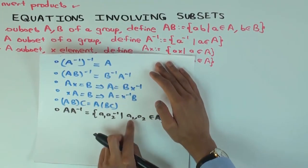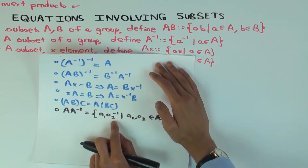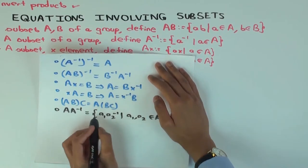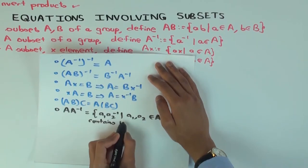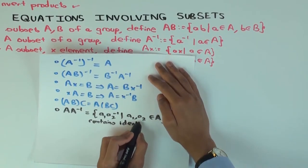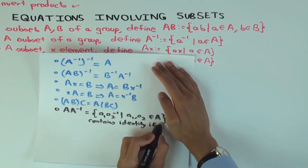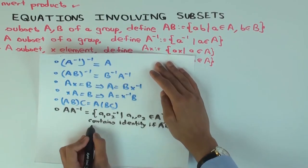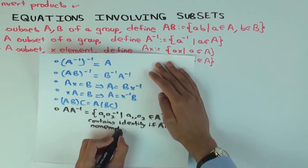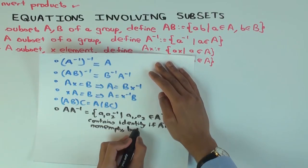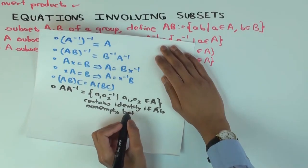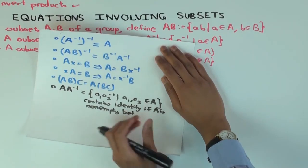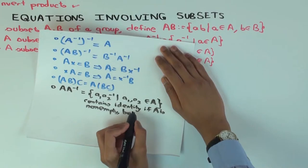Now, if A is non-empty, you pick A1 and A2 as equal elements, you will definitely get the identity element. So this contains the identity if A is non-empty. But it could be bigger. In fact, it usually will be bigger unless A just has one element. If A has more than one element, it definitely would be more than the identity.